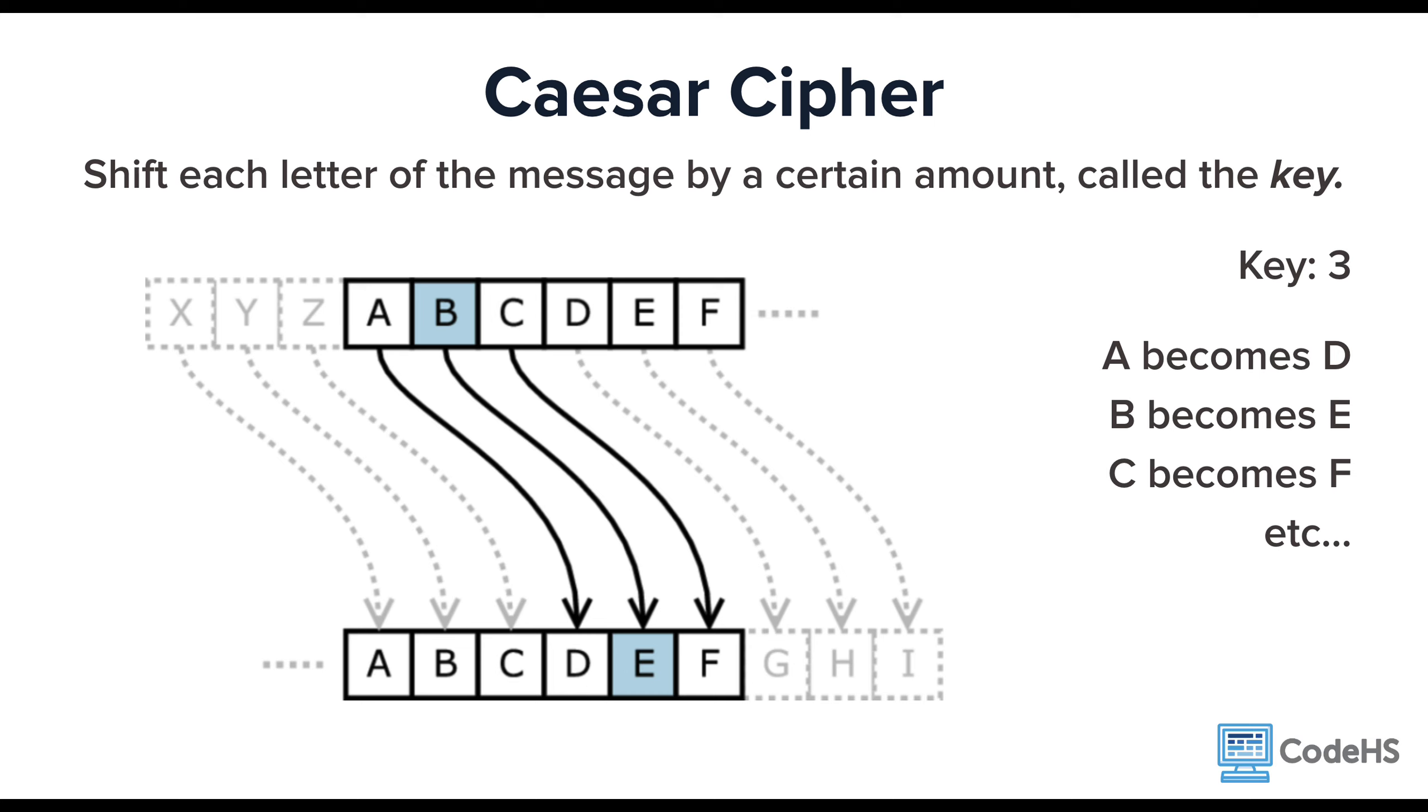Here, we can see that a key of 3 would shift all letters over 3 spaces. This would replace all As with Ds, and replace all Bs with Es, and so forth. Let's take a closer look.